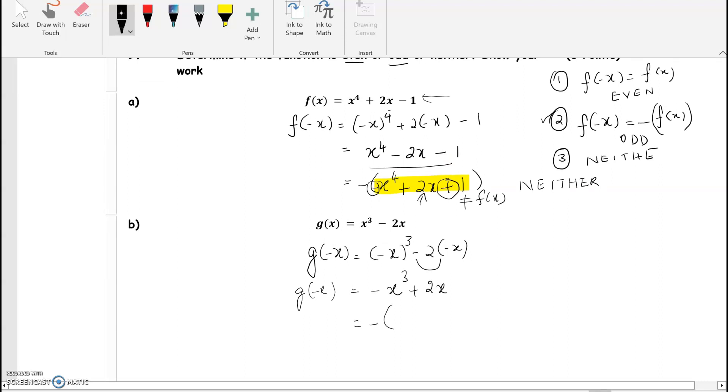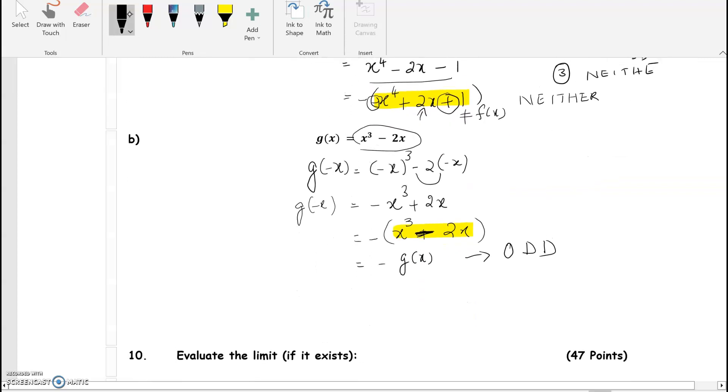And now let's check if it's odd. Factor out the negative. I'm sorry, that should be a negative 2x. And now look at the function inside the parentheses. That's exactly equal to the function we started with. So this is equal to minus the function g of x. This tells us that it's an odd function.